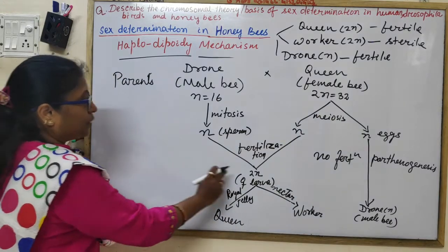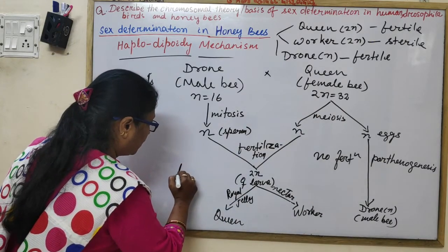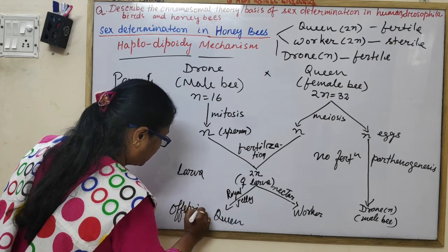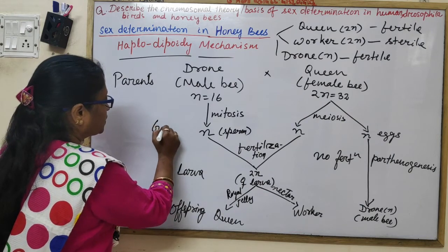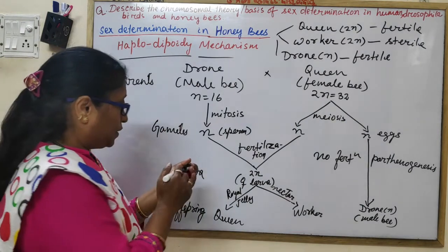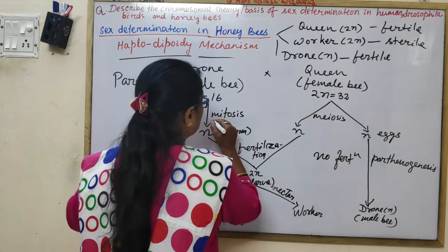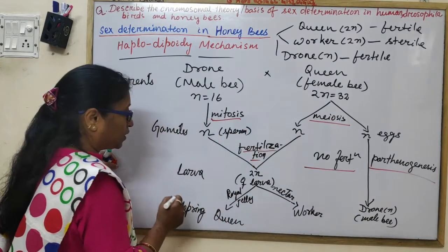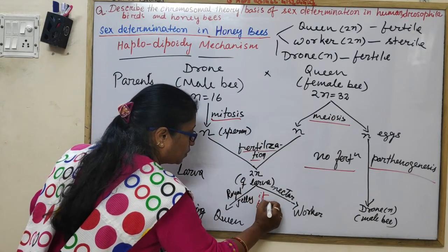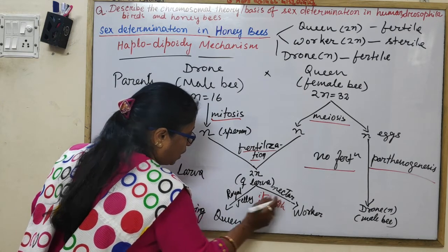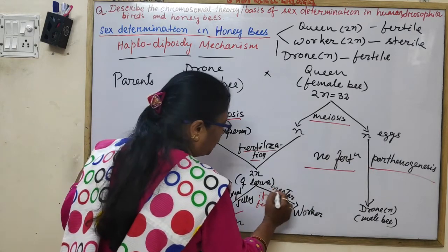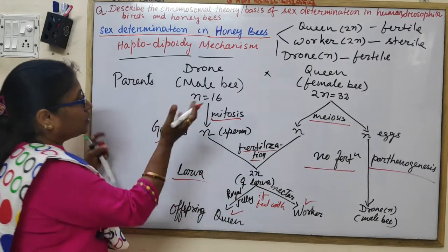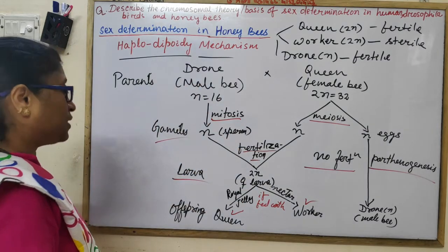Do not forget to write: mitosis (for drone sperm production), meiosis (for queen egg production), fertilization, no fertilization through parthenogenesis, fed with royal jelly → queen, fed with nectar → worker. This is all you have to write down for sex determination in honeybees.